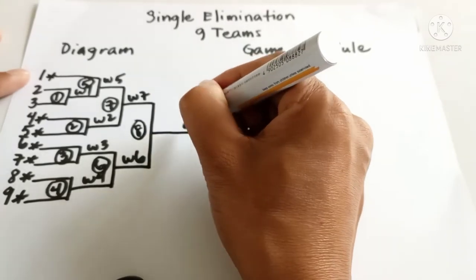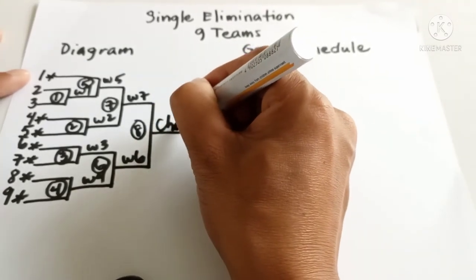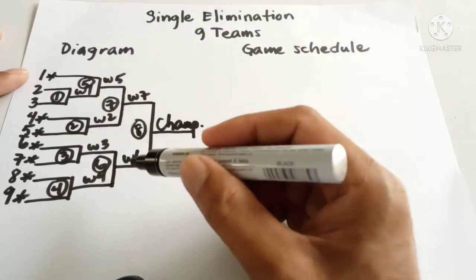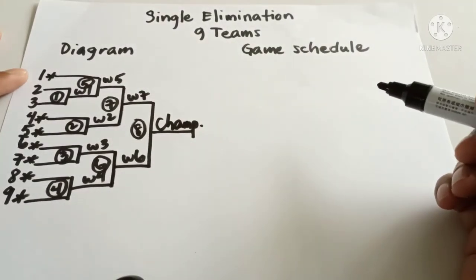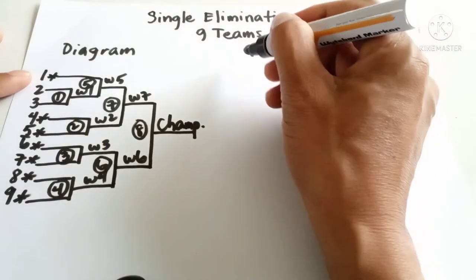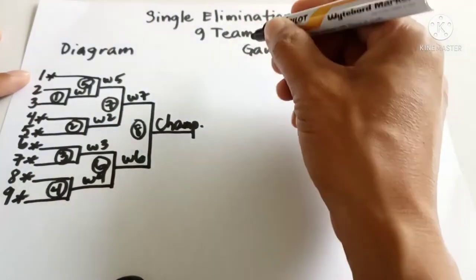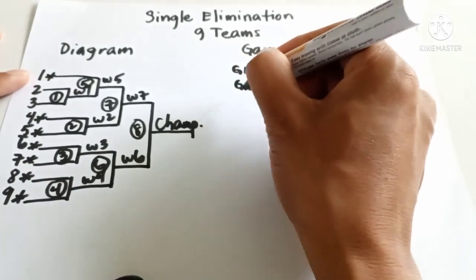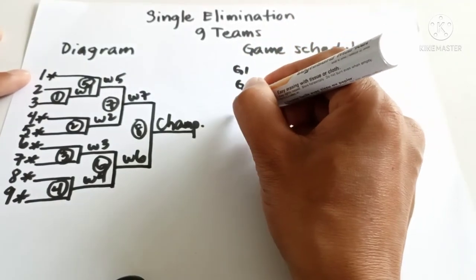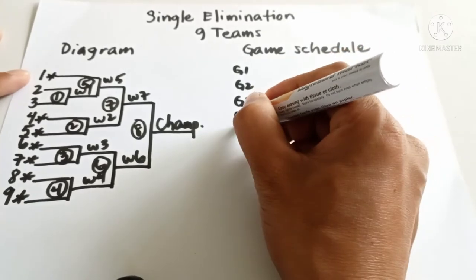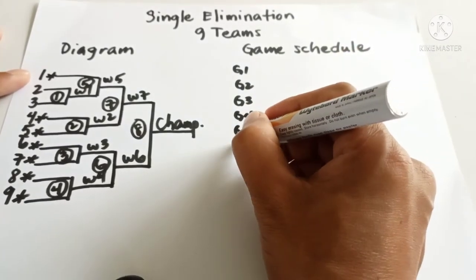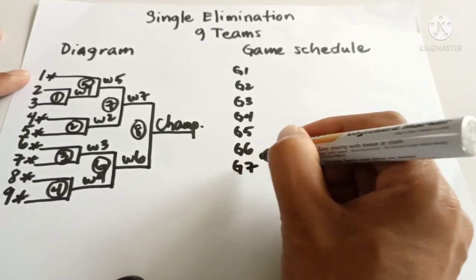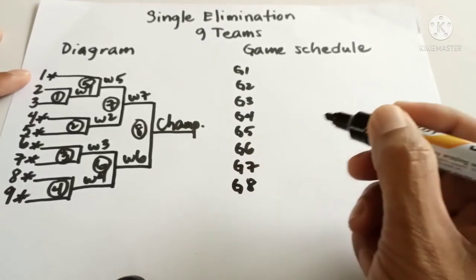Now let us proceed to the game schedule. Since we have eight games: game one, two, three, four, five, six, seven, eight.